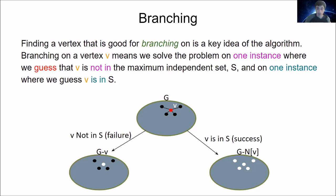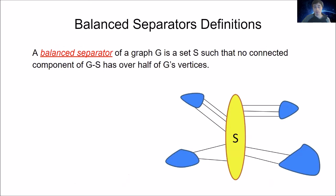We get the return of both solutions and return whichever is larger. Another key idea is balanced separators. A balanced separator of a graph G is a set S such that no connected component of G minus S has over half of G's vertices. Here's a picture: if we remove S from G, all the resulting components are small — none has more than half the vertices.